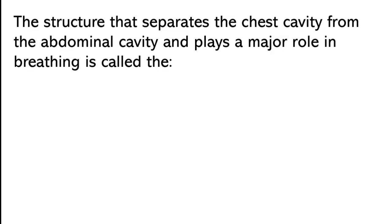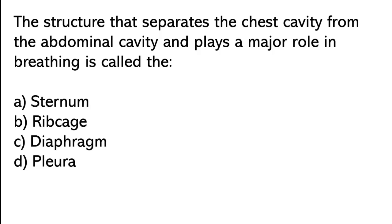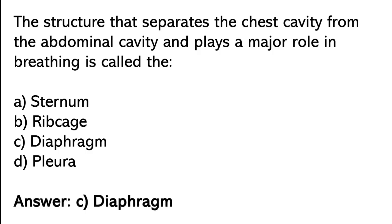The structure that separates the chest cavity from the abdominal cavity and plays a major role in breathing is called — sternum, rib cage, diaphragm, pleura. The correct answer is option C. The structure that separates the chest cavity from the abdominal cavity and plays a major role in breathing is called the diaphragm.